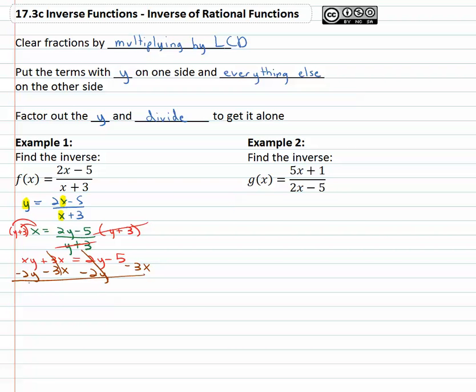Careful, we only combine like terms. 2y and xy are not like terms. So we have xy - 2y equals -5 - 3x. Those aren't like terms either.